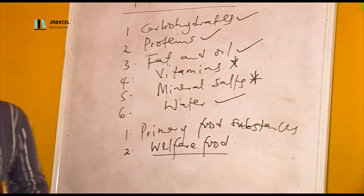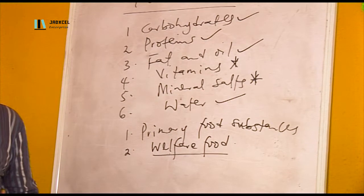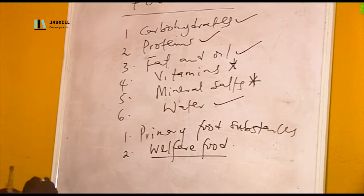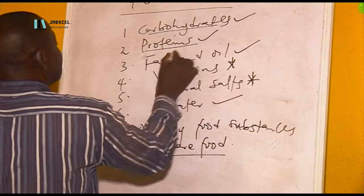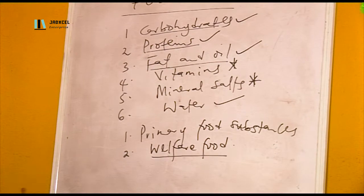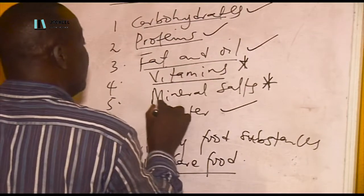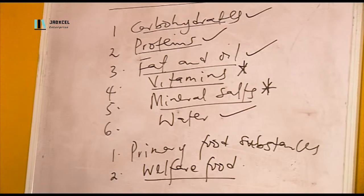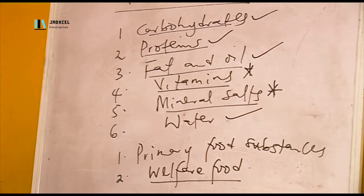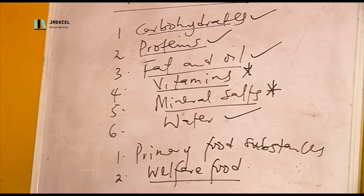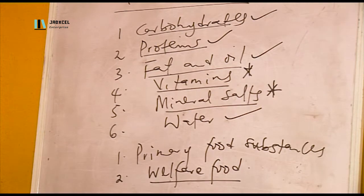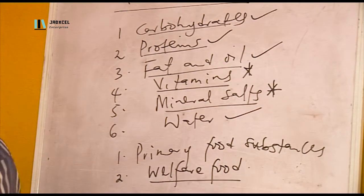At this level, when we want to test for food, we only test for carbohydrates, proteins, and fat and oil. In the higher level, you test for vitamins and mineral salts. But at this level, I only want to talk about the test for carbohydrates, test for proteins, and test for fat and oil. Number one: test for carbohydrates.